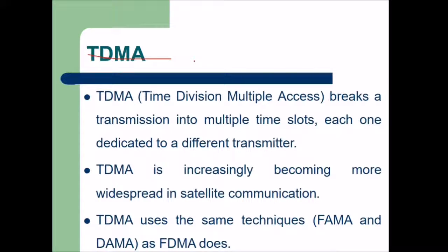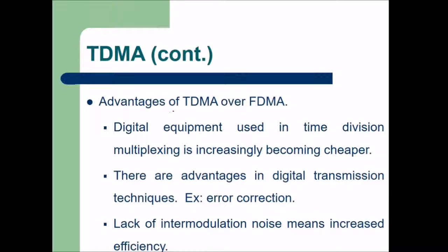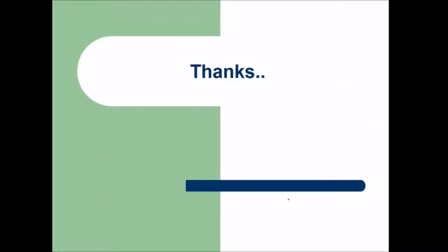TDMA (Time Division Multiple Access) breaks a transmission into multiple time slots, each dedicated to a different transmitter. TDMA is increasingly widespread in satellite communication and uses the same FAMA and DAMA techniques as FDMA. Advantages of TDMA include: digital equipment used in time-division multiplexing is becoming cheaper, there are advantages in digital transmission such as very good error protection, and the lack of intermodulation noise increases efficiency. This was a basic overview of satellite communication and satellites.